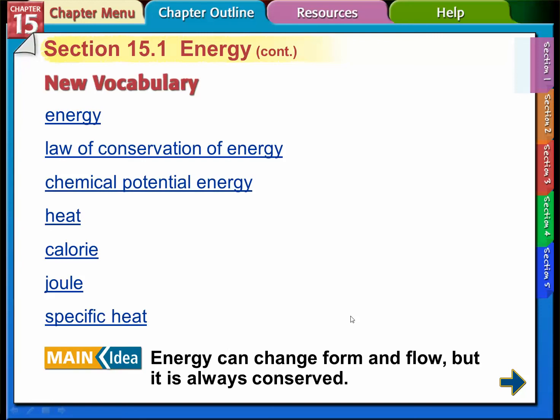I'm going to go over all this vocabulary: energy, law of conservation of energy, chemical potential energy, heat, calories, joules, specific heat. The main idea is that energy can change form and flow, but it's always conserved. Energy can change the form that it's in, flow from one object to another, but the amount of energy is always conserved.